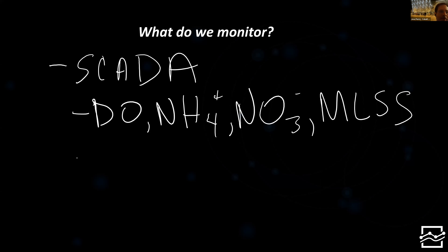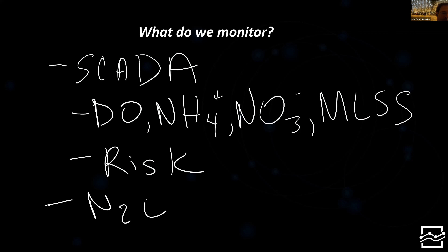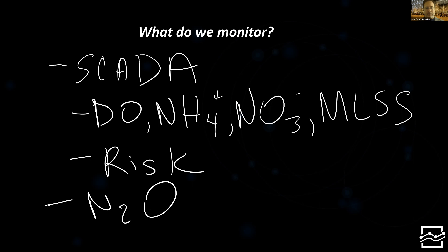The other thing we want to monitor is the risk. Now that we have this data, we can look at how the risk is evolving. If N2O has gone up, we can look at the risk to understand why. And then we want to monitor the N2O itself — either continuously physically monitoring or continuously virtually monitoring with machine learning, essentially using machine learning as a soft sensor for N2O. Depending on how the model is trained, SCADA data could also include air flow, plant flow, and other parameters, but DO, ammonia, and nitrate are the most important.